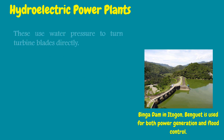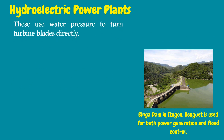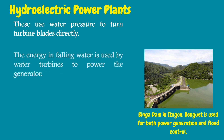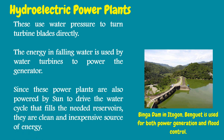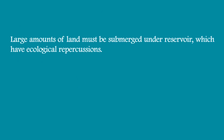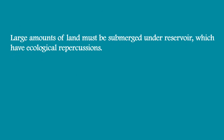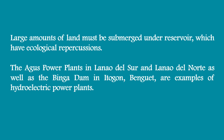Hydroelectric power plants use water pressure to turn turbine blades directly. The energy of moving water is used by water turbines to power the generator. Since these power plants are also powered by the sun — which drives the water cycle that fills the needed reservoirs — they are a clean and inexpensive source of energy. However, large amounts of land must be submerged under reservoirs, which has ecological repercussions. The Agus power plants in Lanao del Sur and Lanao del Norte, as well as the Binga Dam in Itogon, Benguet, are examples.